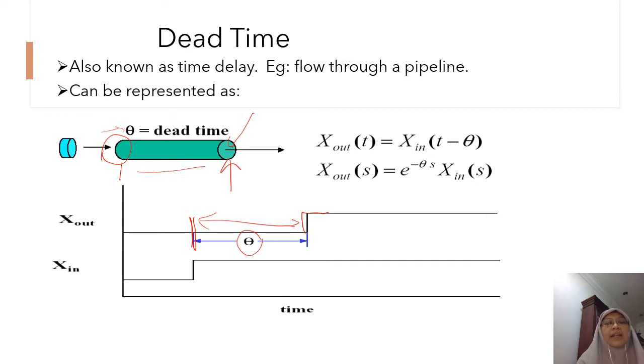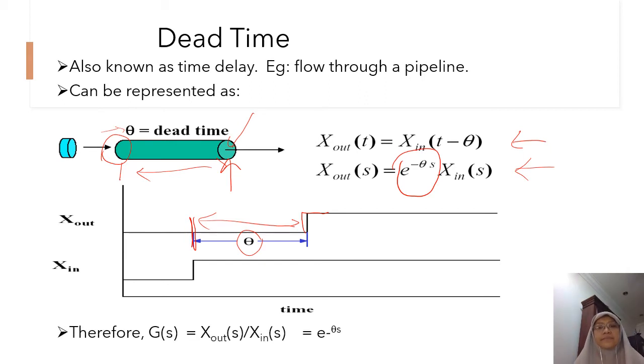Now, this time delay is termed as dead time. This is the time domain equation of dead time. And this is the Laplace domain equation. In the Laplace domain, the time delay is represented by the exponent of the negative of theta s. So, the transfer function is simply e to the minus theta s if it is just pure time delay.